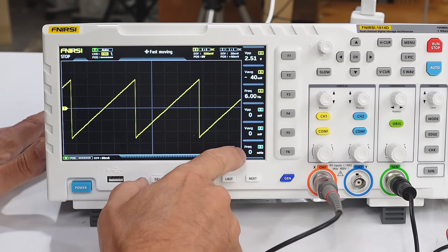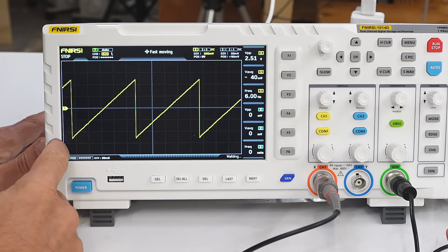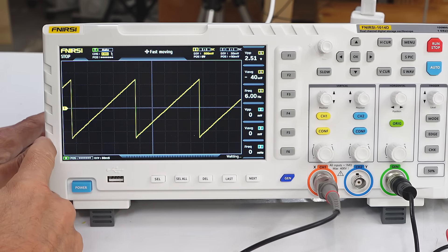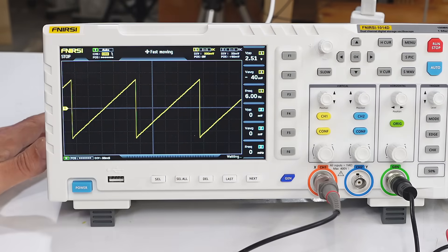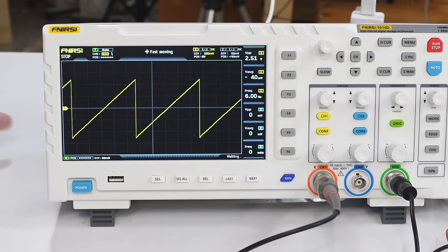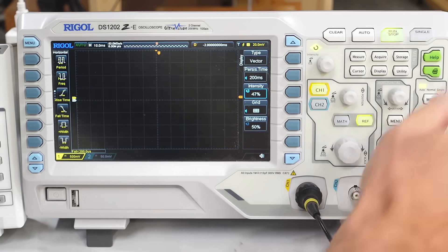Which is to say each 50 millisecond division has actually only got 50 A to D samples in it. And counting across, we've got 14 divisions. So 50 samples times 14, we only have 700 A to D samples across the screen. And that's all we got. Zooming in doesn't give me any more samples.